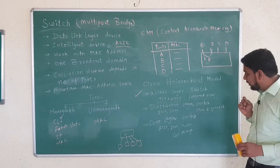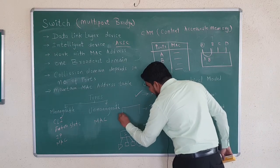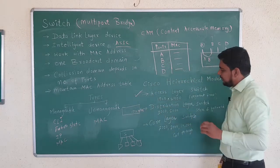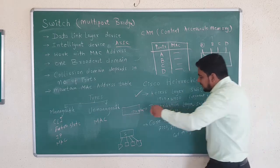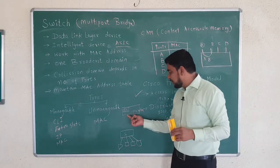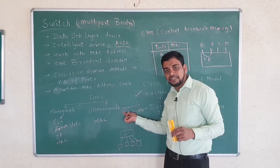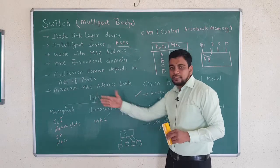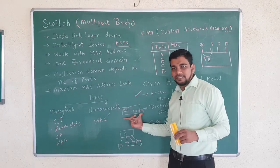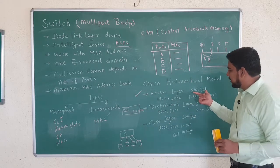Fragment-free switching works as follows: when a frame of 1500 bytes is being transmitted, the access layer switch checks the first 64 bytes for error detection using CRC — Cyclic Redundancy Check. If no error is found in the first 64 bytes, it transmits the complete frame. If an error is detected in the first 64 bytes, it discards the complete frame. This is the working of fragment-free switching in an access layer switch.